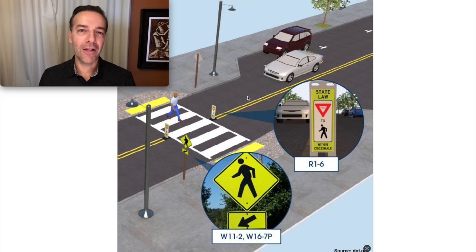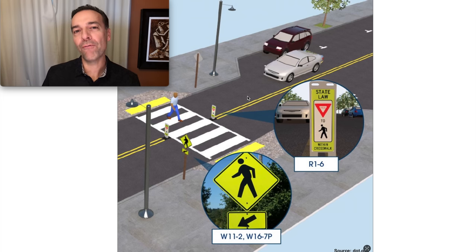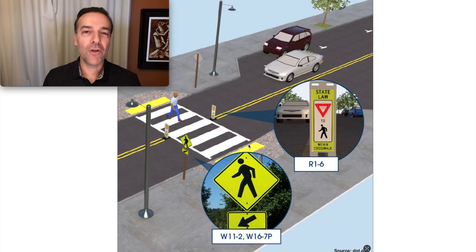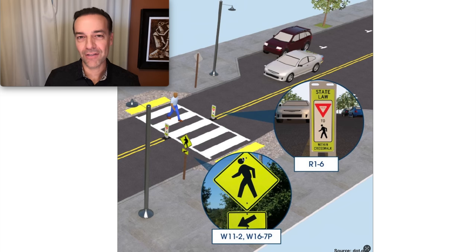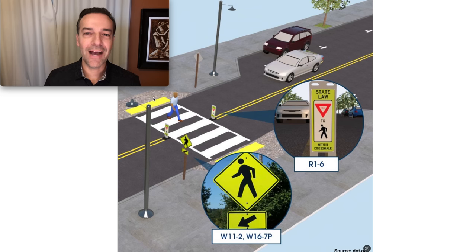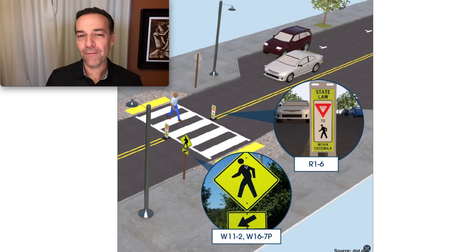To help you understand this concept, let me first demonstrate it by using something we're probably all familiar with — a crosswalk, as you see here. Most of us know what a crosswalk is designed to do. It's designed to get us from one side of the street safely to the other side of the street, and the concept I'm going to share with you in this video is similar. It's designed to help you enter trades at the safest possible spot that will also enable you to exit that trade safely and for a win a very high percentage of the time.